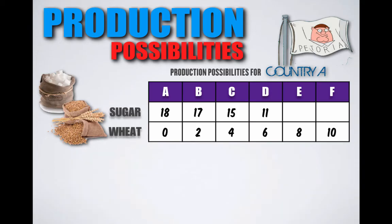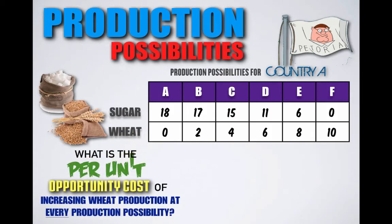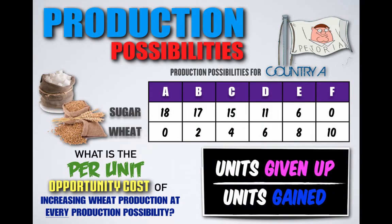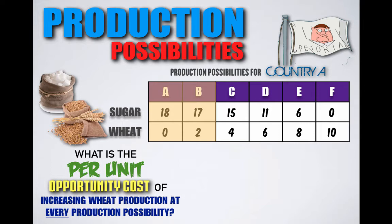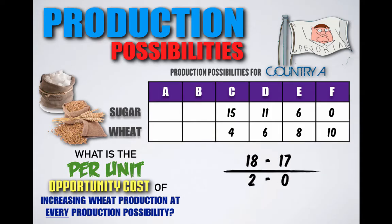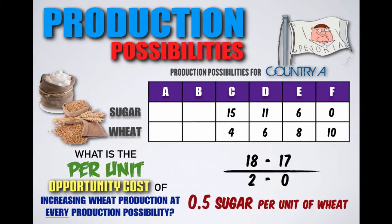Remember that economics uses marginal analysis, so it's important for us to find the marginal cost and marginal benefit of shifting from one production possibility to another. We must also find the per-unit opportunity cost of increasing wheat production at every production possibility. In order to find the per-unit opportunity cost of production, we take the units given up and divide it by the units gained. If Petoria shifted from combination A to B, they decreased sugar from 18 to 17 units but increased wheat from 0 to 2 units — losing 1 unit of sugar but gaining 2 units of wheat. So for every unit of wheat gained, Petoria lost the potential to produce half a unit of sugar.